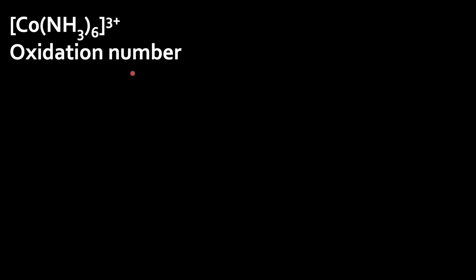Oxidation number states the oxidation state of the central metal ion. In this complex, cobalt is the central atom. The ligand NH3 is a neutral ligand which does not carry any charge. Keeping the oxidation number of the central atom as X, with 6 neutral ligands contributing 0 charge and the overall charge being +3, we get X = +3. So the oxidation number of cobalt in [Co(NH3)6]³⁺ is +3.